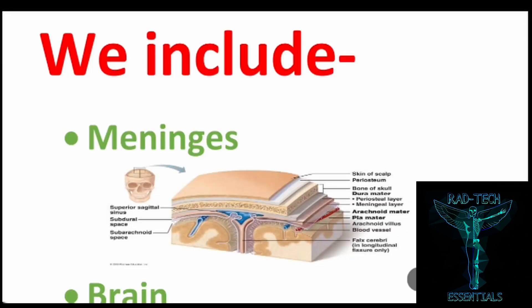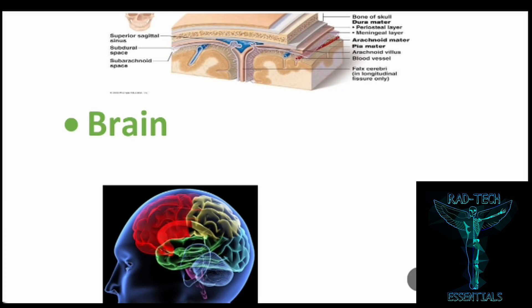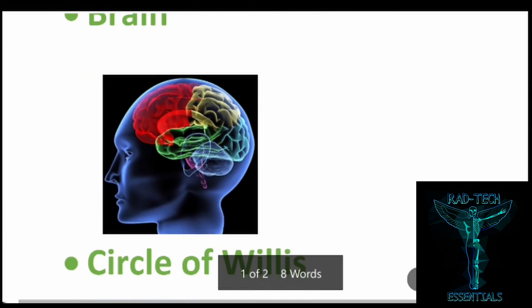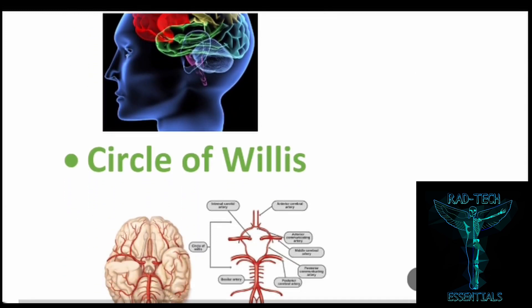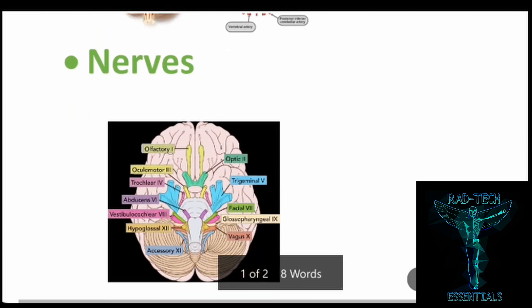Now let's continue with the anatomy of the brain in this second tutorial. We're going to study the meninges or protective coverings of the brain, then the brain itself in its various sections — axial, coronal, and sagittal — and its various parts, as well as the circle of Willis or blood supply of the brain, and the cranial nerves.